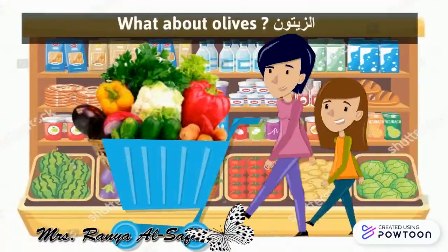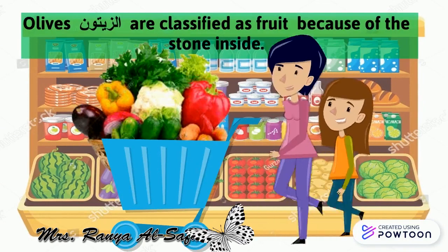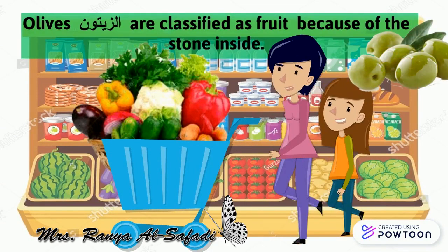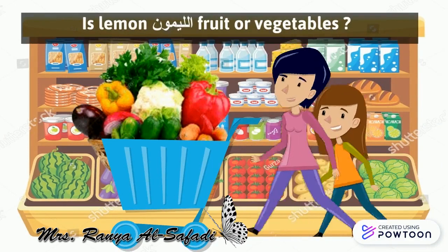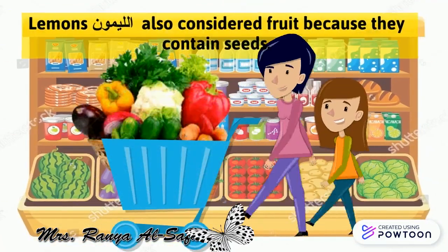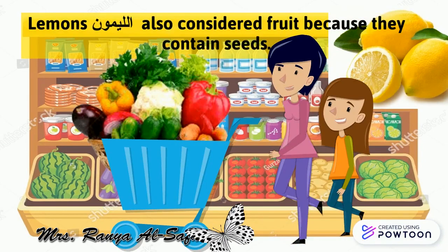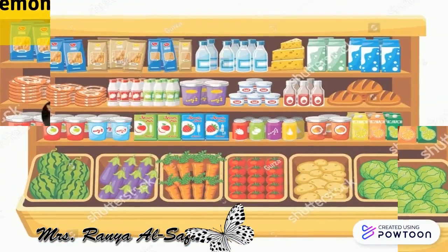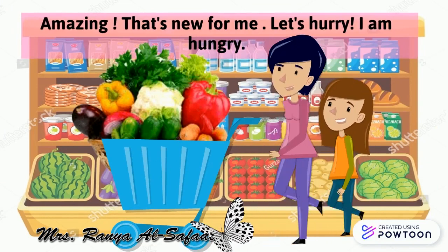What about olives? Are they vegetables? Olives are classified as fruit because of the stone inside. Is lemon a fruit or vegetable? Lemon is also considered a fruit because it contains seeds. Amazing — that's new for me! Let's hurry, I'm hungry.